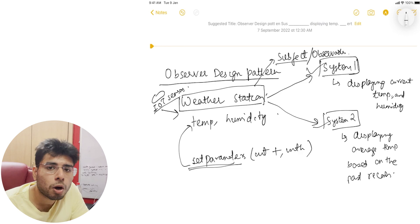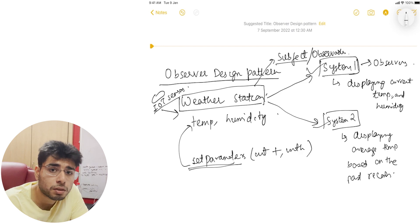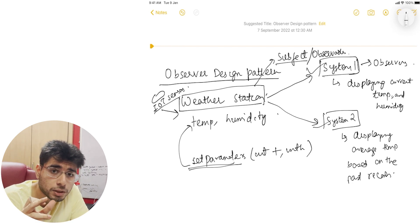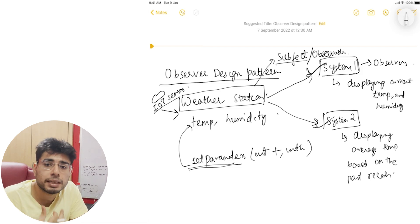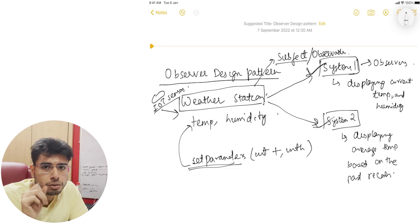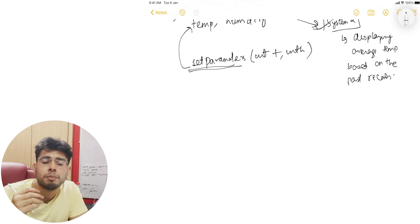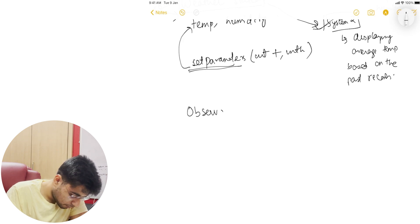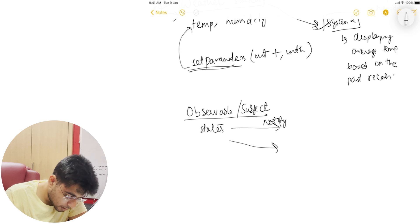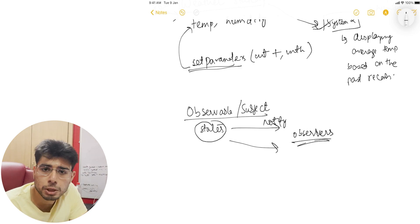System one and system two — the observers — are observing the weather station. To give a more generic definition: we have an observable or a subject that has some states, and whenever there is a change of state, it needs to notify its observers. The observers will take these states and perform their respective calculations based on those states.